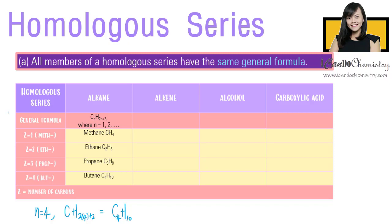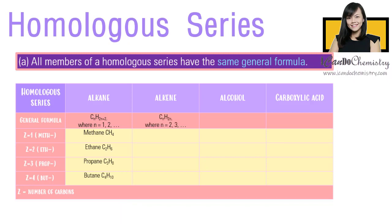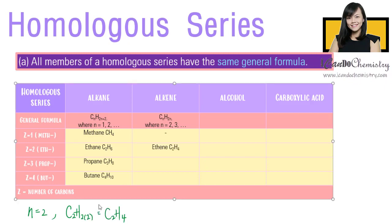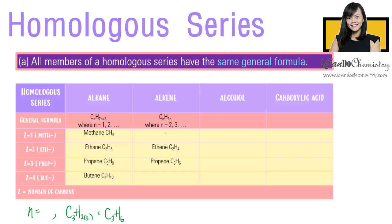For alkene, the general formula is CnH2n, where N starts with 2. Do take note: alkene requires at least 2 carbons to form — CH2 does not exist. The first member is ethene, N is 2, hence the formula is C2H4. The second member is propene, N is 3, hence the formula is C3H6. The third member is butene, N is 4, hence the formula is C4H8.